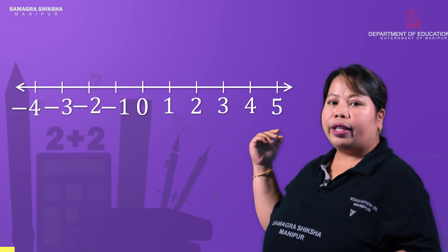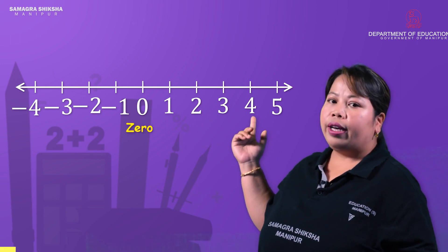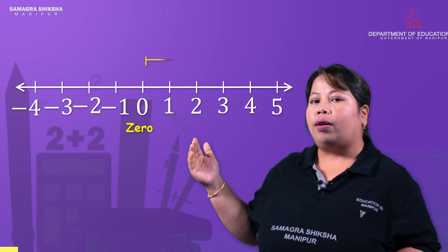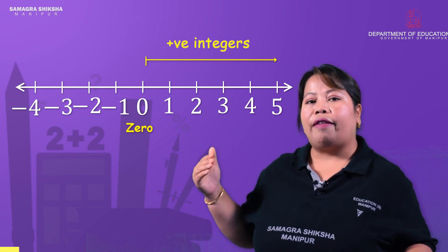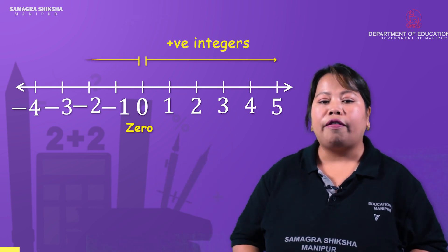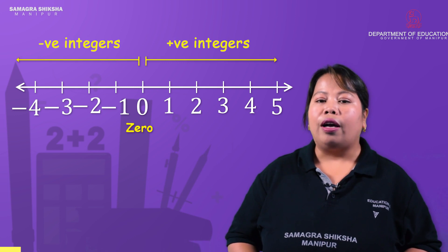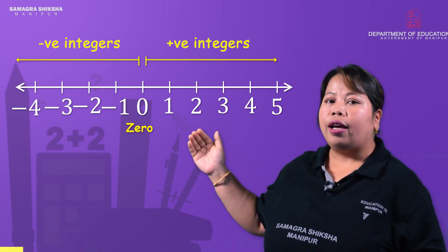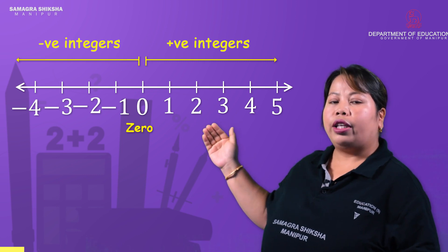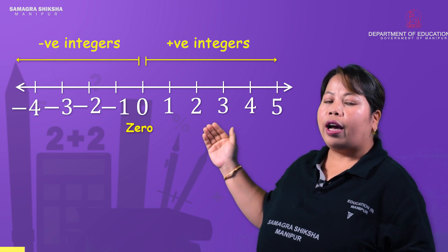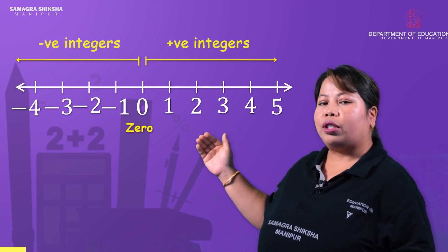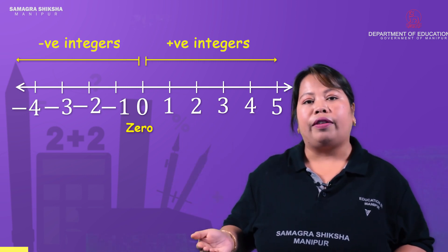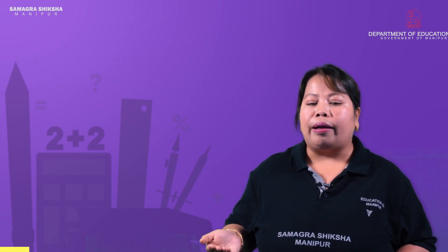We have a calibrated scale called 0. We have positive integers on the right hand side and negative integers on the left hand side. Either positive or negative integers, we need to identify them on the number line.